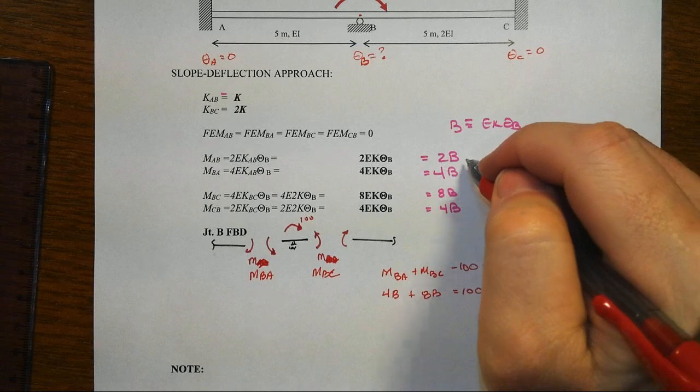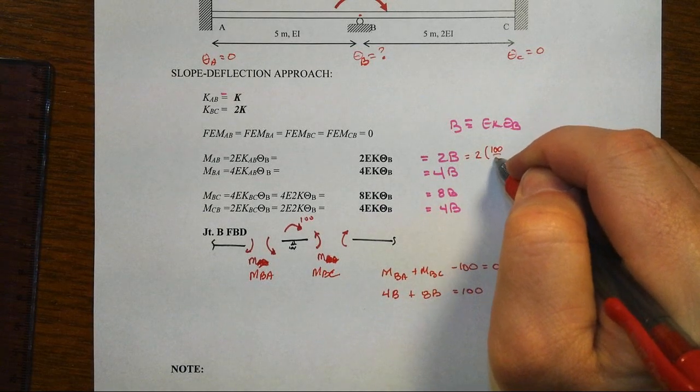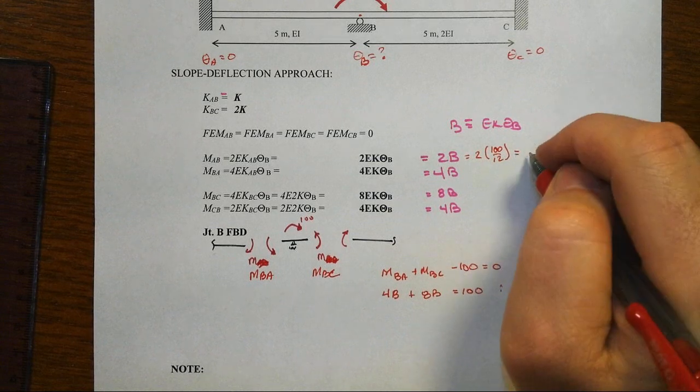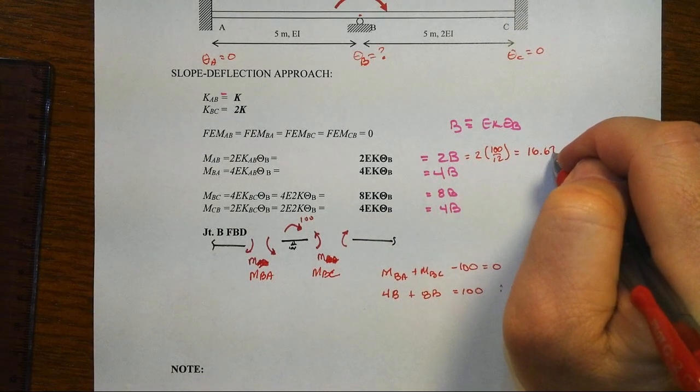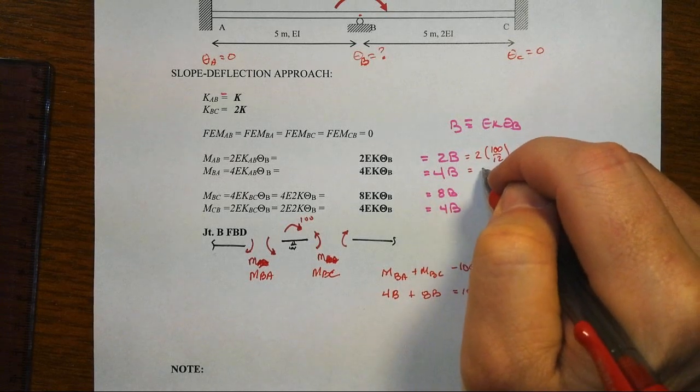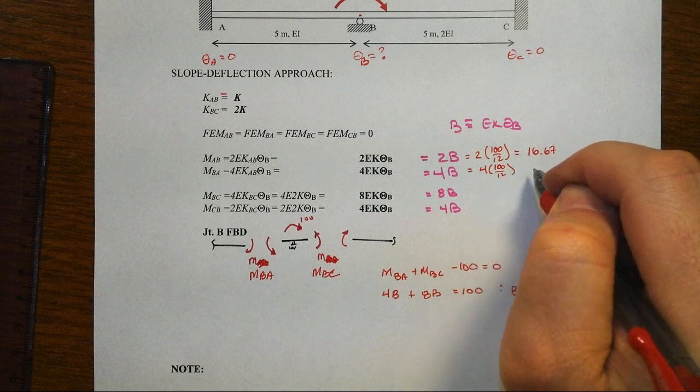Substitute those back in up here, and so we'll have 2 times 100 over 12, and that's going to be about 16.67 and change. You substitute in here, 4 times 100 over 12, that's the same thing as 100 over 3, or 33.33, so there's that 2 to 1 ratio.